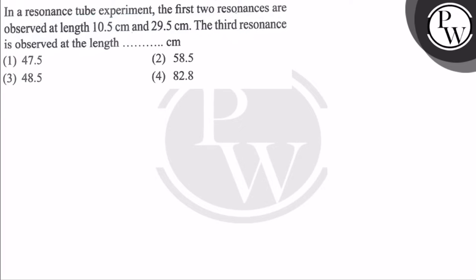Hello guys, let's see this question. The question says in a resonance tube experiment, the first two resonances are observed at length 10.5 and 29.5 cm. The third resonance is observed at the length... So our first resonance is given.